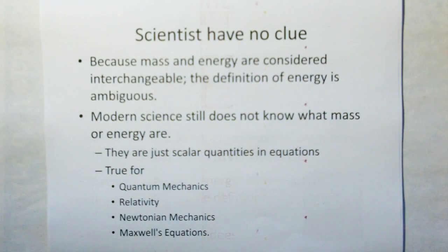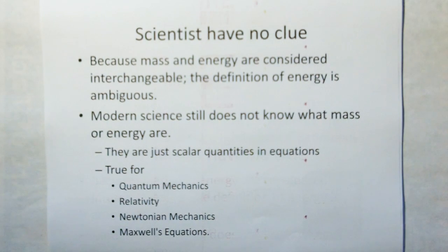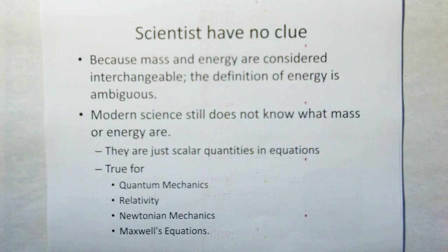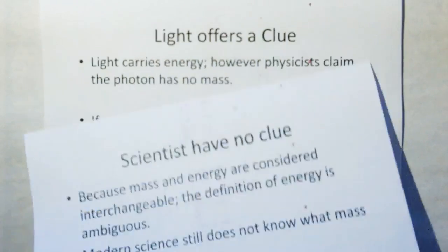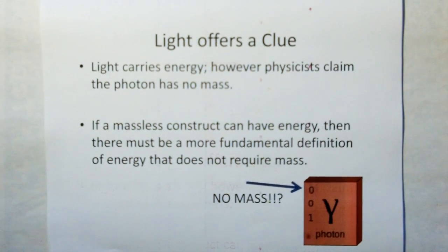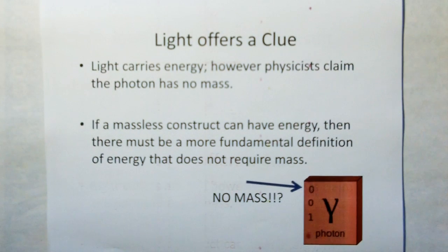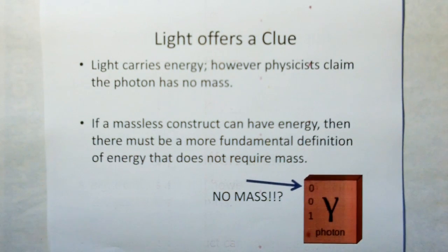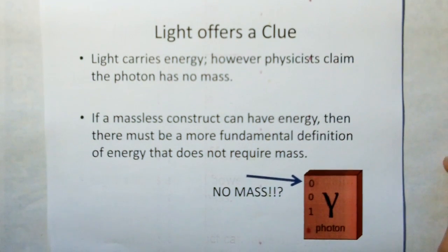Because mass and energy are considered interchangeable, the definition of energy is ambiguous. Modern science does not know what mass or energy are. They're just scalar quantities in equations. This is true for quantum mechanics, relativity, Newtonian mechanics, and Maxwell's equations. But light offers us a clue. They've had the clue but totally ignored it. Light carries energy, however physicists claim the photon has no mass. So if a massless construct can have energy, there must be a more fundamental definition of energy that does not require mass.